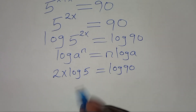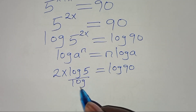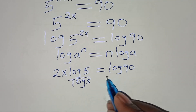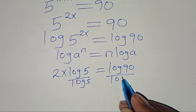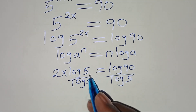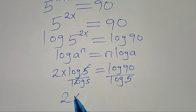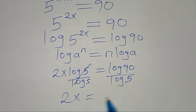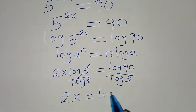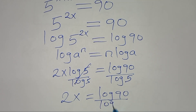Now let's divide both sides by log 5, so that we have 2x is equal to log 90 divided by log 5.